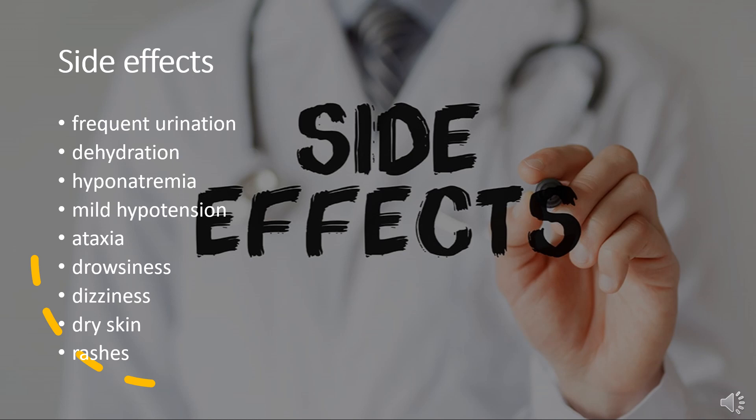Because of its antiandrogenic activity, spironolactone can, in men, cause breast tenderness, gynecomastia (breast development), feminization in general, and demasculinization, as well as sexual dysfunction including loss of libido and erectile dysfunction. Although these side effects are usually confined to high doses of spironolactone.